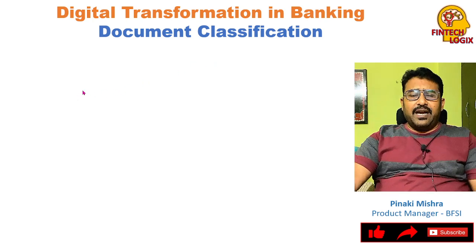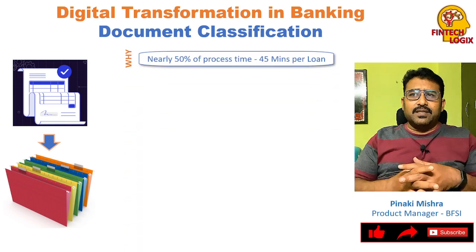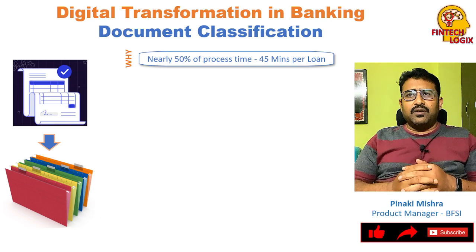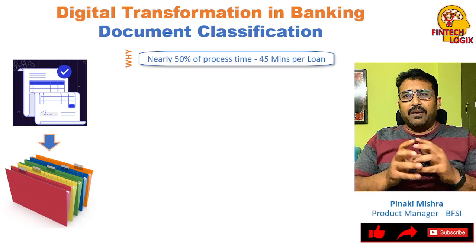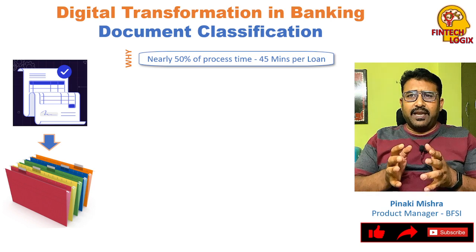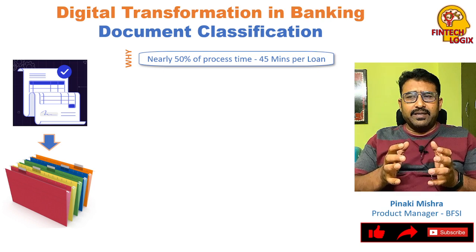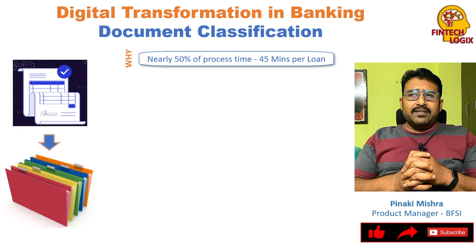The basic question that comes here is: why are we so worried about document classification? This is a small area, but we fail to recognize that almost 50 percent of our time in a normal lending origination — or even further processes in loan servicing — takes around 45 minutes, roughly 50 percent of our processing time, just in identifying what document it is and what content is in it.